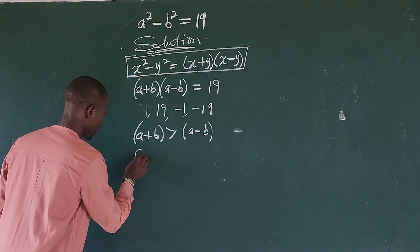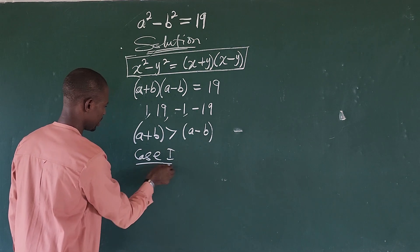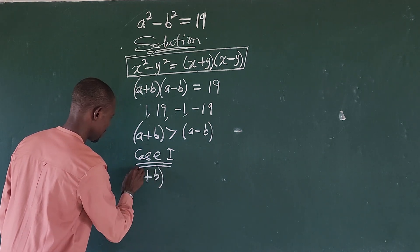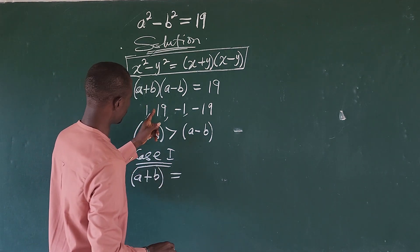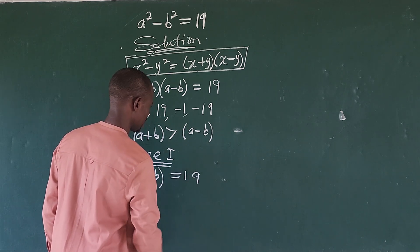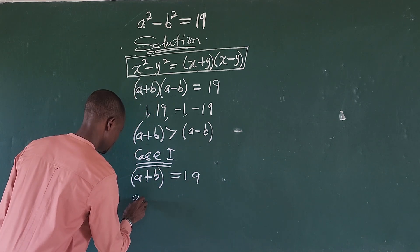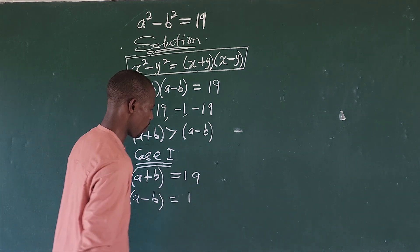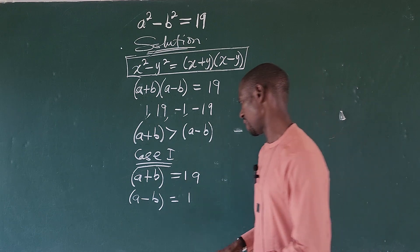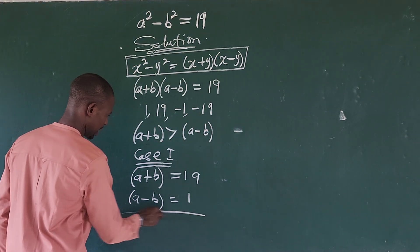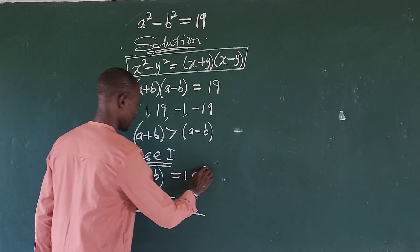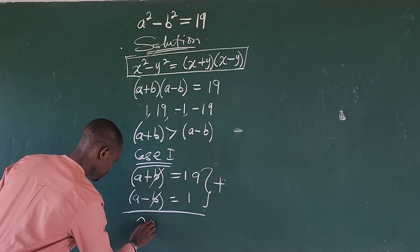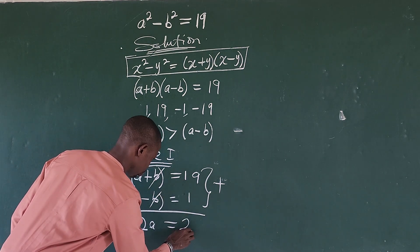So let's take our case 1. For case 1, we are going to have a+b automatically equal to positive 19 and a-b equal to positive 1. Using the elimination method here. So from here, we want to eliminate b because we are having plus minus here. So let's add these two equations. If we add this and this will leave. So we are now left with 2a equal to 20.